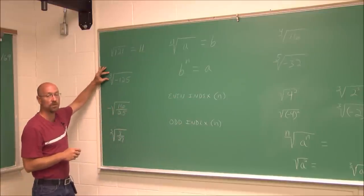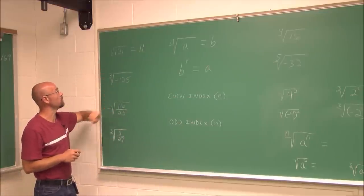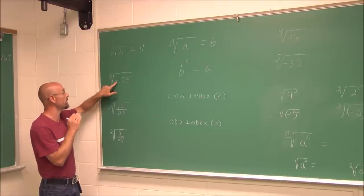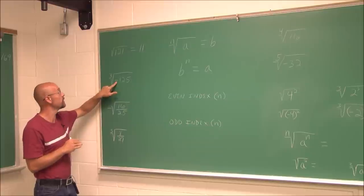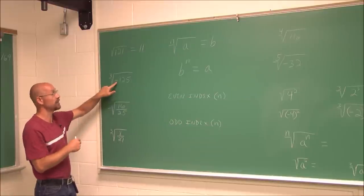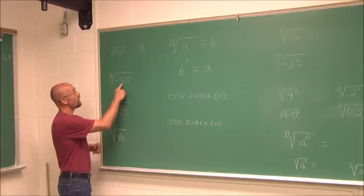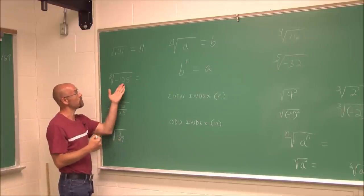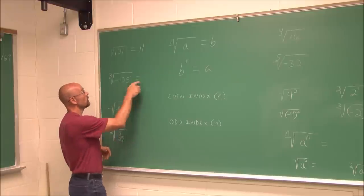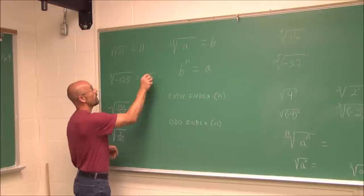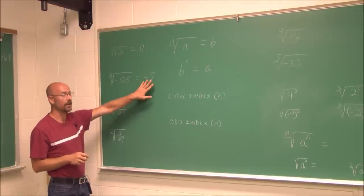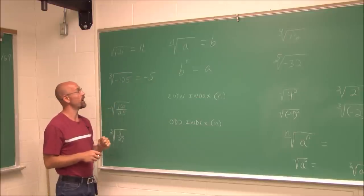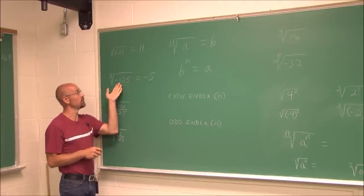Here we have the cube root of negative 125. I identify this as the cube root of a negative — that's OK, because a negative times a negative times a negative is a negative value. I also identify 125 as 5 cubed — a perfect cube. So the answer is negative 5. We can check: negative 5 times negative 5 is positive 25, times one more factor of negative 5 gives negative 125.